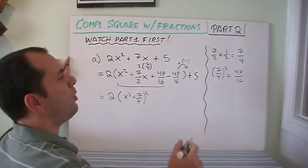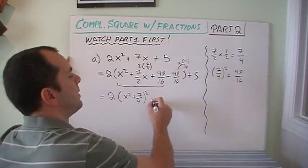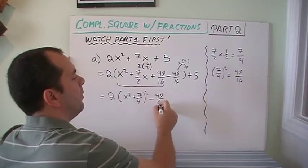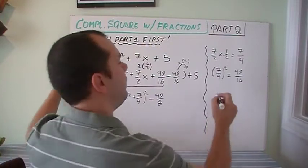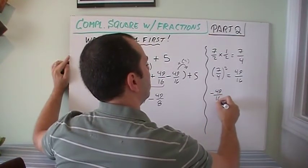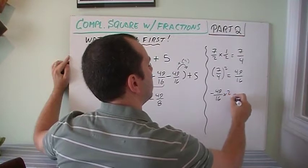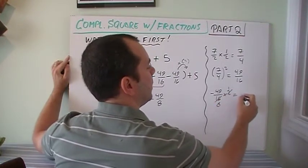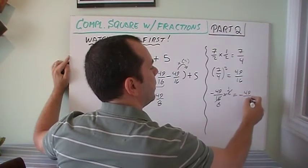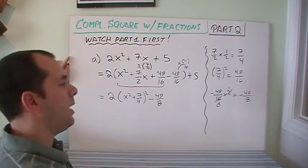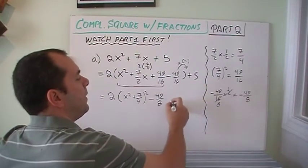Now I know that that 2 is going to simplify with that 16. So that 16 will become 8. And if I cannot see that, I will write it on the side, be minus 49 over 16 times 2. And I know this cancels with the 1, this cancels with an 8. And that's minus 49 over 8. And that worked.